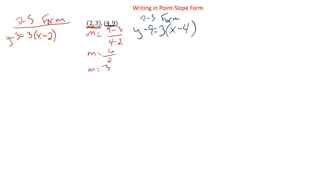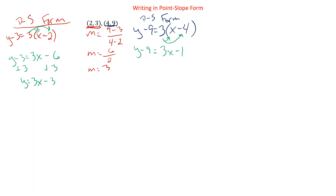The process of converting to slope-intercept form is always going to be the same. We're going to distribute the slope. So we'll have y minus 3 equals 3x minus 6, because 3 times 2. Then we solve for y by adding 3 over: y equals 3x, and negative 6 plus 3 is negative 3. We do the same thing for the other equation: distribute to get y minus 9 equals 3x minus 12, add the 9, so y equals 3x minus 3 because negative 12 plus 9 is negative 3.